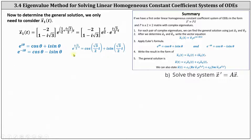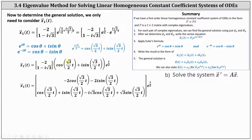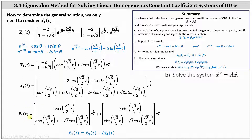Applying Euler's formula, e to the power of i square root three divided by two t equals cosine of square root three divided by two t plus i sine of square root three divided by two t. We perform the substitution: negative two times the Euler expression gives the first row, and the complex number one minus i square root three times the Euler expression gives the second row, all multiplied by e to the power of t divided by two. We then break this two by one matrix into two matrices — the first containing real parts and the second containing imaginary parts — giving us x one of t as their sum. From this we identify x three of t and x four of t.